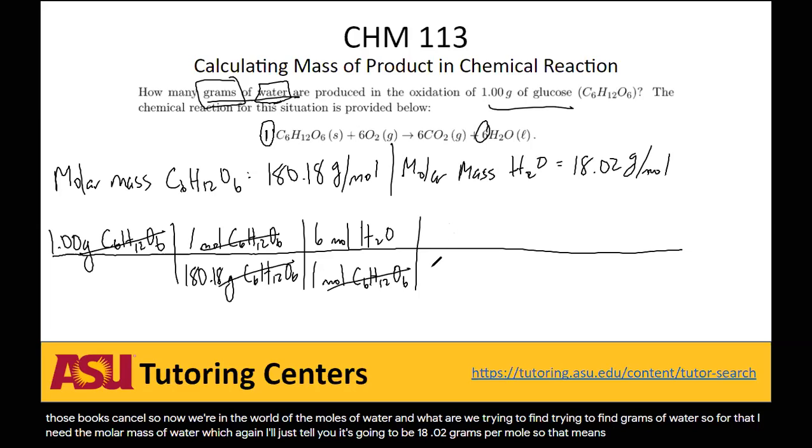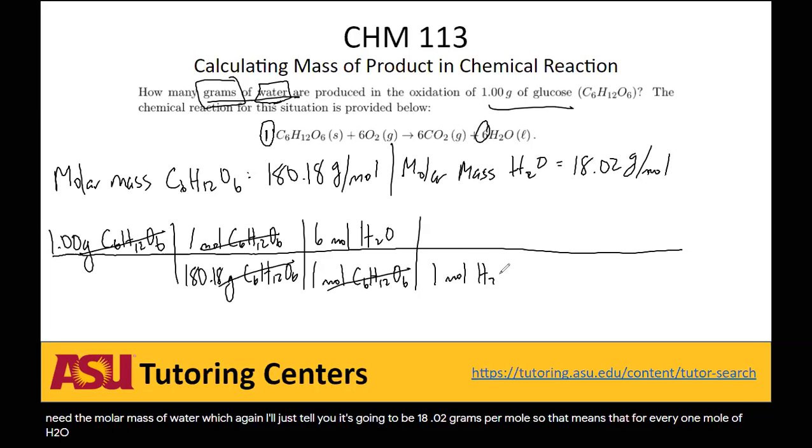So that means that for every 1 mole of H2O, I have 18.02 grams of H2O. The moles cancel. And there you go. My final units are grams of H2O, which is exactly what I'm looking for.